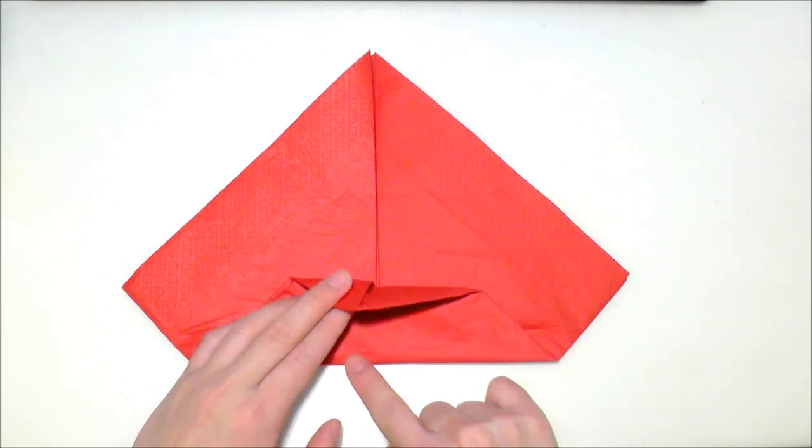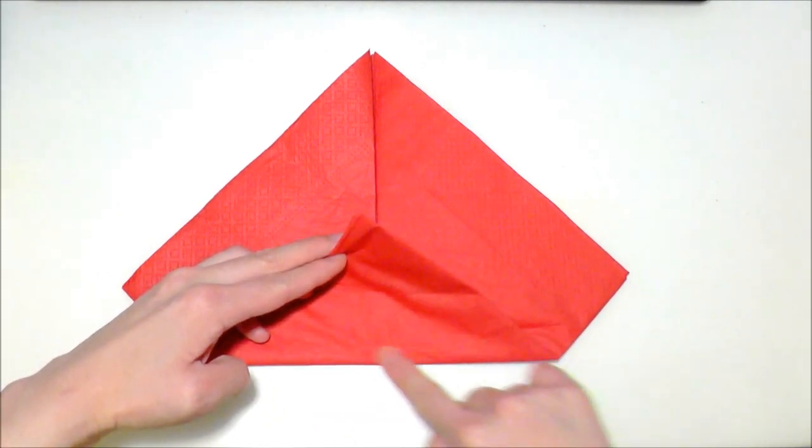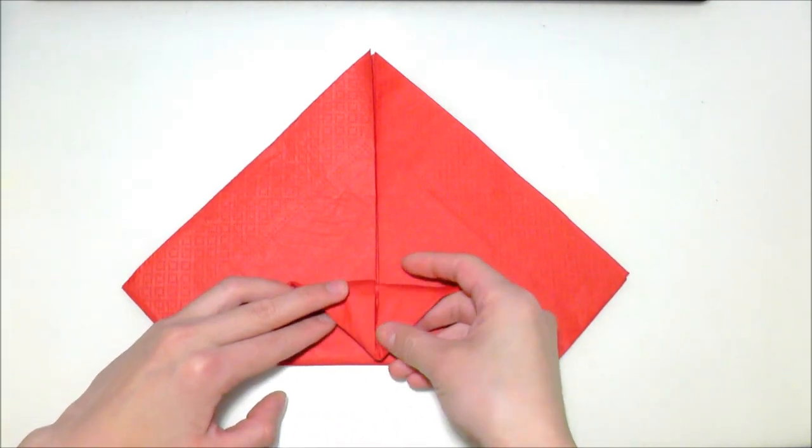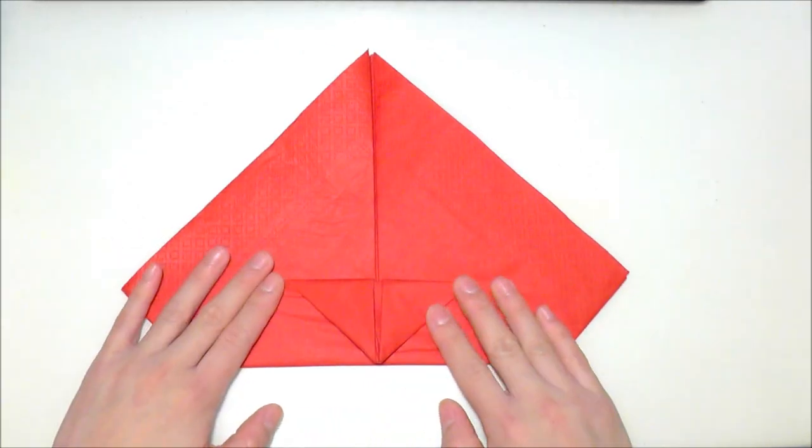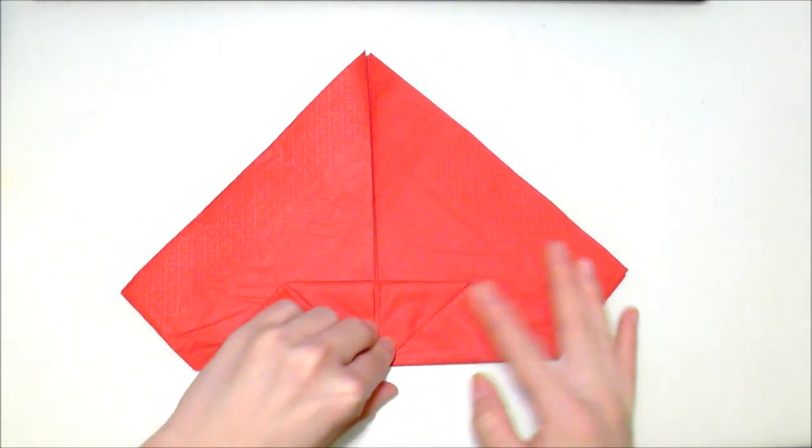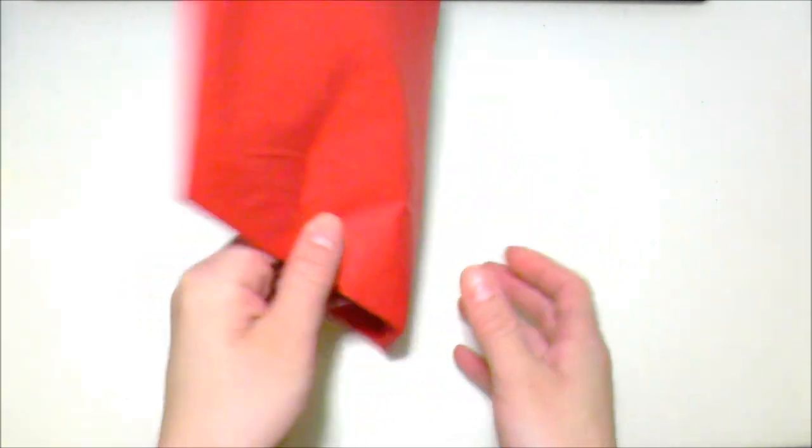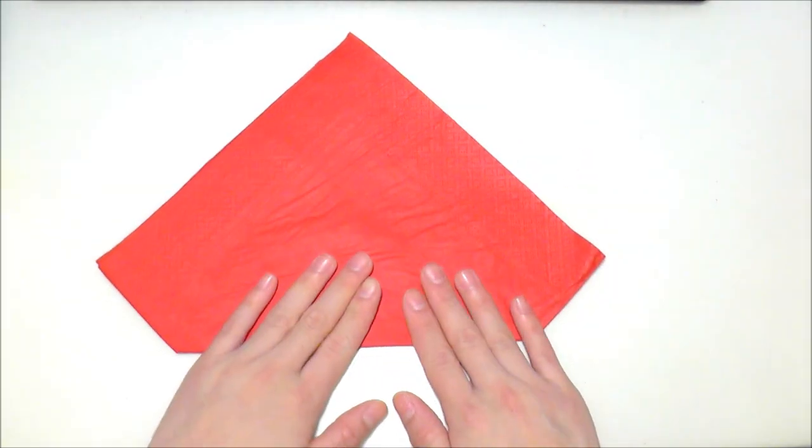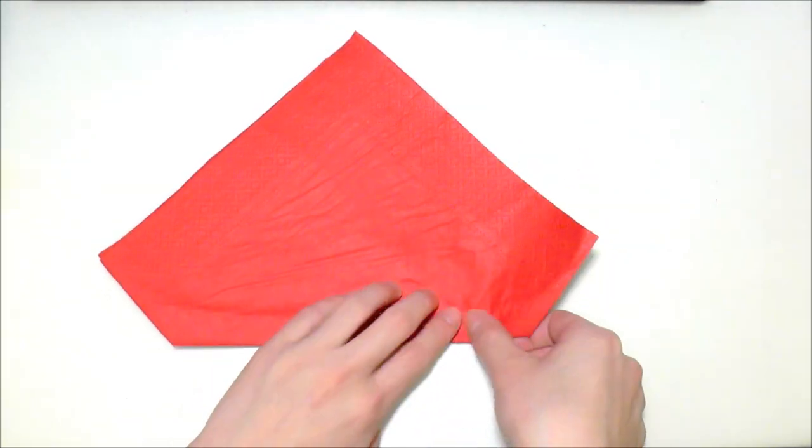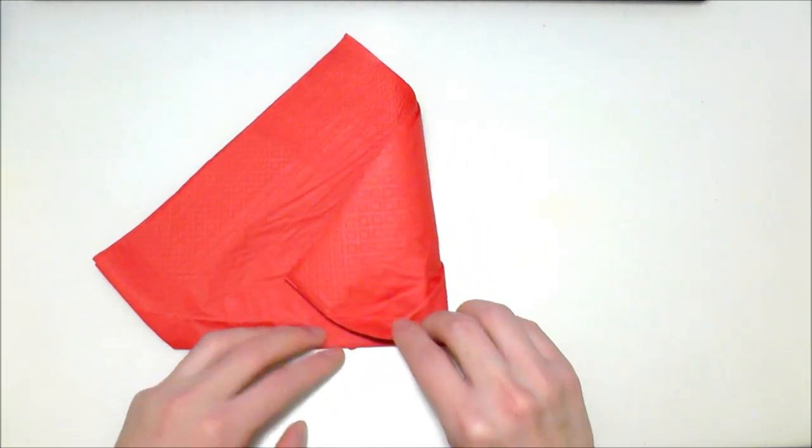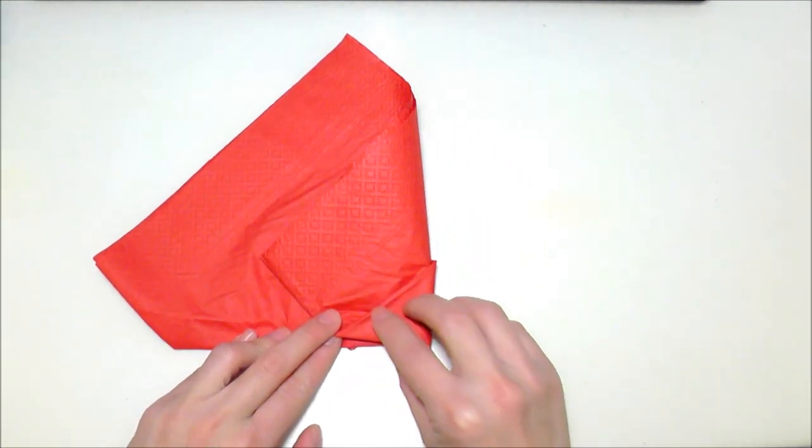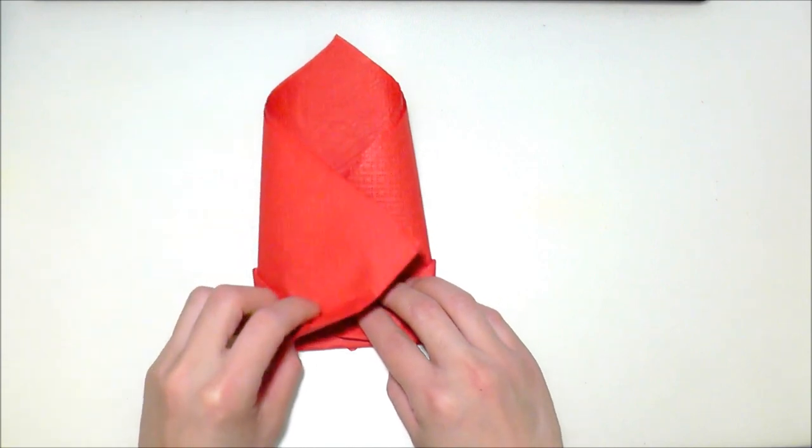After that, turn the napkin around so this side is facing us. We're going to fold the right side about one-third of the way in, and then fold the left side about one-third of the way in as well.